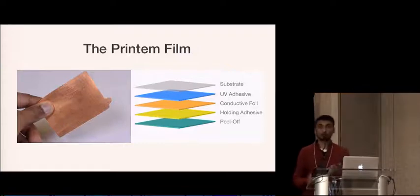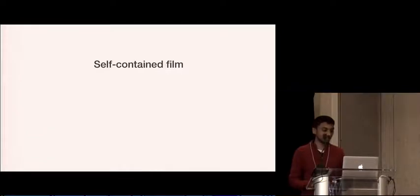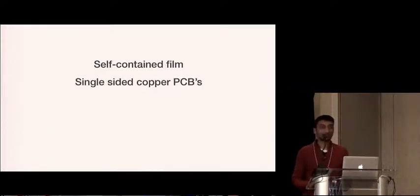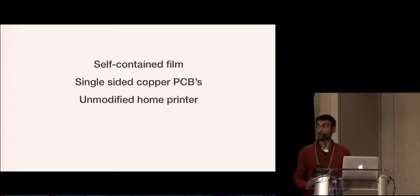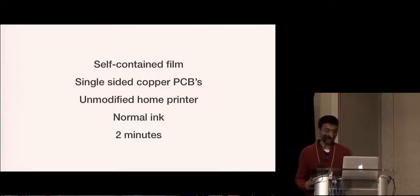So we developed the Printem Film. The Printem Film is a composite sheet which consists of five layers, all compacted together, which work together to produce circuits instantly and easily. It's a self-contained film for making single-sided copper PCBs with nothing more than your unmodified home printer using normal ink, and it all takes less than two minutes to get done.